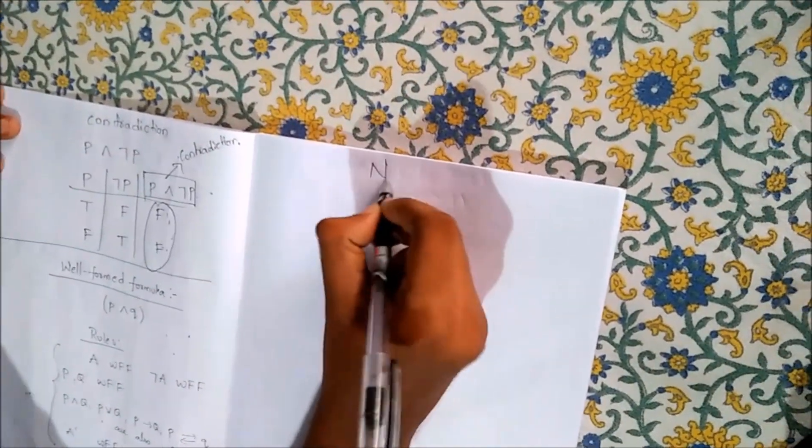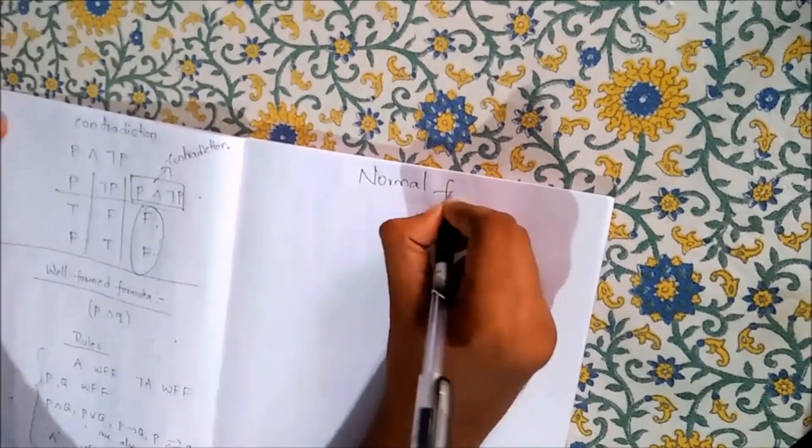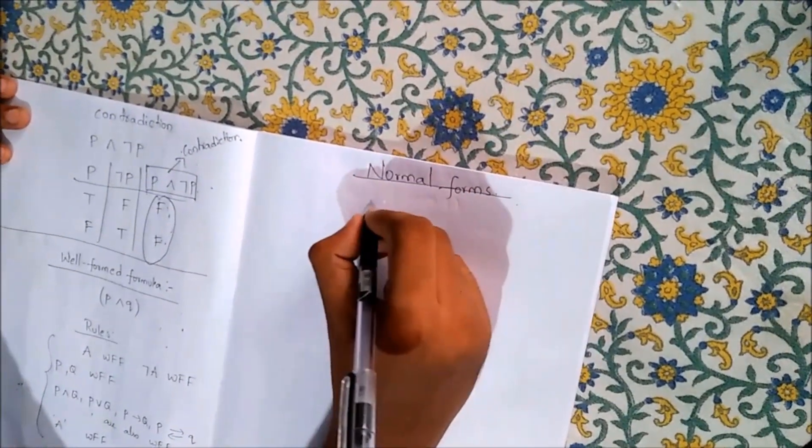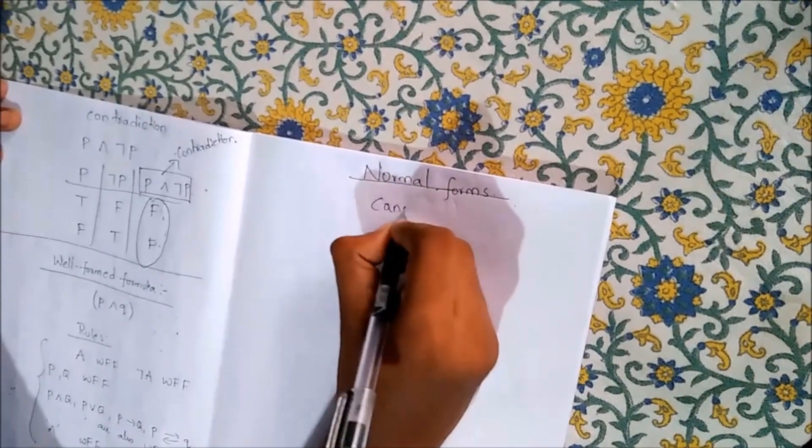Next, we come to the most important concept. Normal forms, also known as canonical forms.